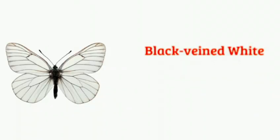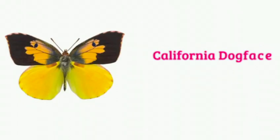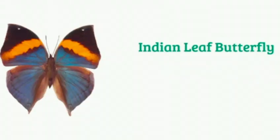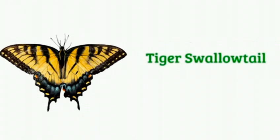Black Vent White. California Dark Fish. Blue Triangle. Indian Leaf Butterfly. Brown Hair Stray. Tiger Swallow Tail.